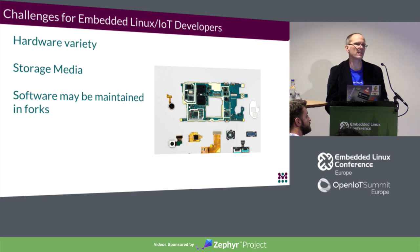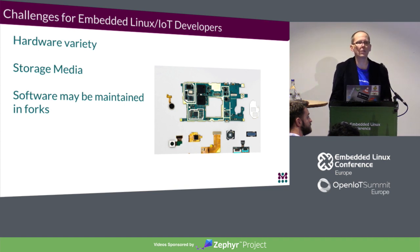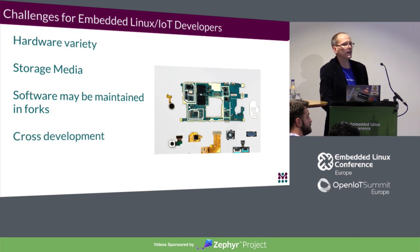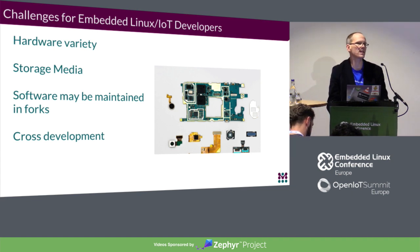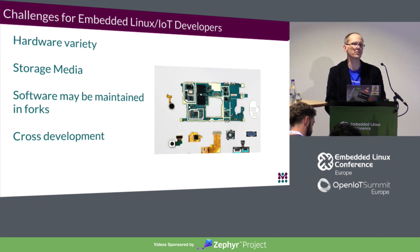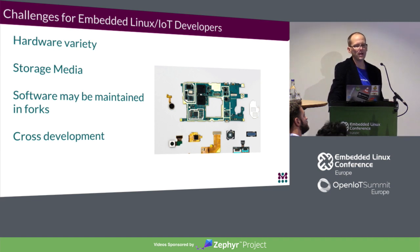When dealing with embedded Linux, the software we're using might not be maintained in the canonical upstream location. A lot of times we have kernels maintained by the chipset providers — eventually changes make their way back upstream, but at any given time we might be working with different forks that aren't necessarily the same from project to project. And we're generally dealing with cross development. We do see some native development where you install a desktop distribution on your board and run your compiler there, but that's generally pretty painful given the performance of most of these devices.